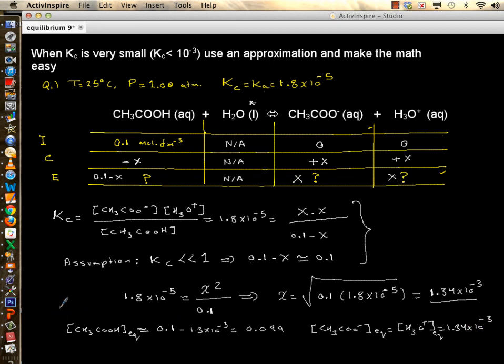Learn this because soon we are about to walk into acids and bases and these are typical calculations of weak acids and weak bases. So if Kc is much smaller than 1, 10 to minus 3 or smaller than that, you can make an assumption - subtraction of x from a number becomes the number itself because x is very minute.